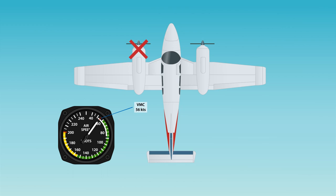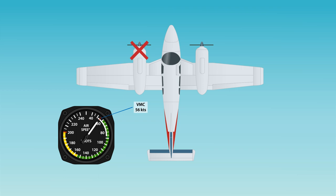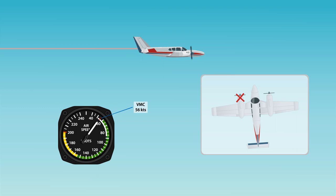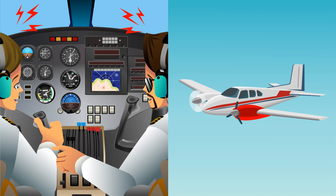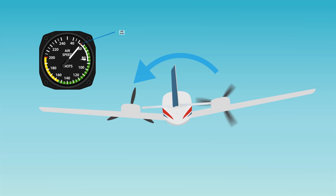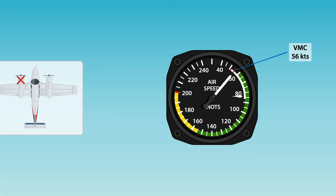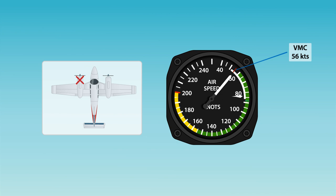The final V-speed unique to multi-engine OEI operations is VMC, which is the minimum control speed with the critical engine inoperative. This is the minimum airspeed at which directional control can be maintained under a specific set of circumstances, and does not include the capability to climb at this airspeed. The critical engine of a multi-engine, fixed-wing, propeller-driven aircraft is the one whose failure would result in the most adverse effects on the aircraft's handling and performance. Determining which side is the critical engine depends on aerodynamic factors and the direction the propellers are rotating. VMC is marked on the airspeed indicator with a red line to indicate single-engine minimum controllable airspeed.